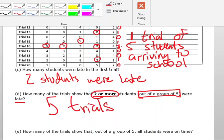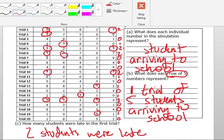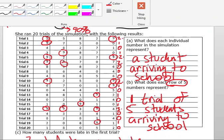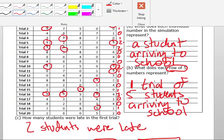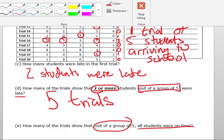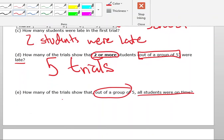So how many trials show that out of the group of five, all students were on time? So I want to go back up, and I actually want to count my zeros for this. So I have one, two, three, four, five, six, seven, eight, nine. So it looks like there were nine days or nine trials where all of the students were listed as being on time. So there were nine trials here.